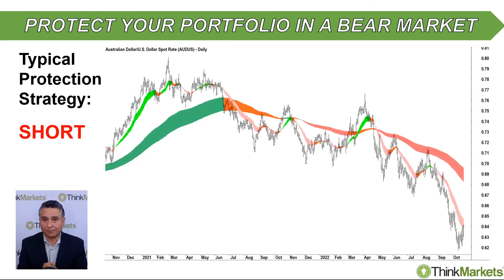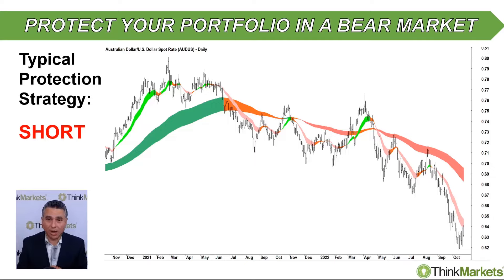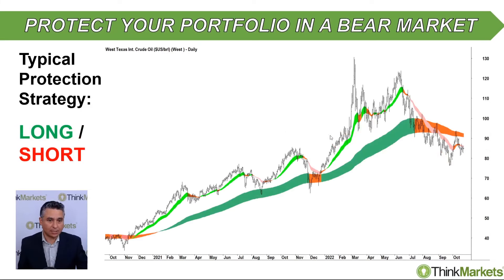Number two: the Australian dollar versus the US dollar. The Aussie dollar is very much a global-growth-oriented currency — it tends to do well when global growth is going well, and it tends to do poorly when the global economy is contracting. That's what's happening now; we're expecting a potentially sharp recession in a number of major economies around the world. We can see how, as the stock markets have transitioned to the downside, the Aussie dollar has also transitioned to the downside.